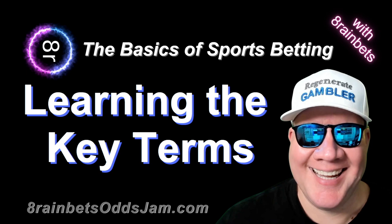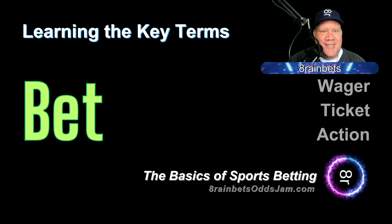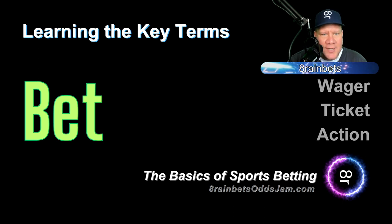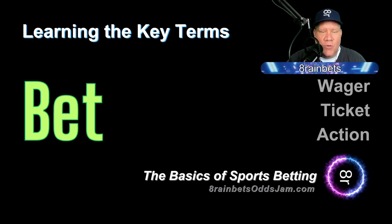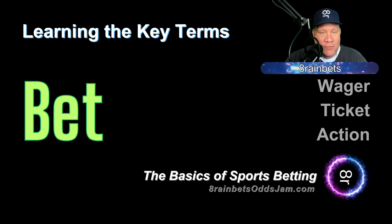We're going to start with the key terms, and there is no bigger key term than 'bet.' What is a bet? Basically a bet, a wager — you might hear 'a ticket' or that you 'have action' — means that you've said you are going to put forth a certain amount of money to be able to win some amount of money if a particular sporting event occurs the way you think it will. So I might think the Cubs are going to win today. I could put a bet on the Cubs winning. By putting it down, I mean I give it to a sportsbook, and if the Cubs win, they're going to give me some amount of money back.